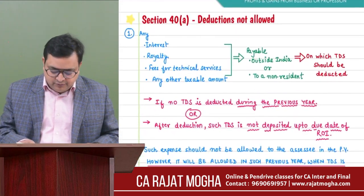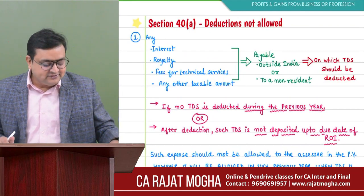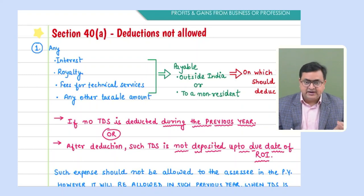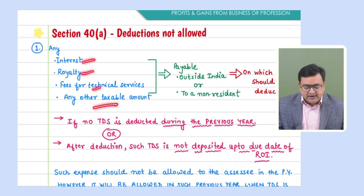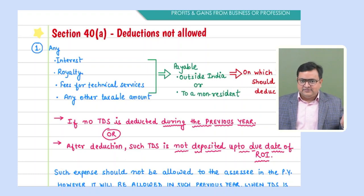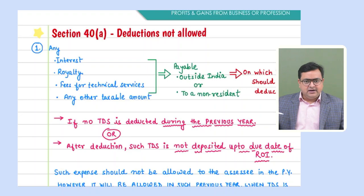Section 40(a) is an examiner's favorite — important both practically and from the examination point of view. The first point says: if you are paying any amount outside India — specifically interest, royalty, and fees for technical services, or any other taxable amount — either outside India or to a non-resident, and that is a taxable amount for that particular person, then when we pay, that party receives income which is taxable in India.